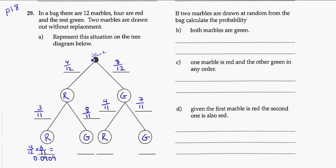And again, timesing along for the other option here. If I did red and then green, four over twelve times eight over eleven, that's going to get me 0.2424. My third option here, green and then red, that's eight over twelve times four over eleven. That will also get me 0.2424. And lastly, two green marbles. So that's eight over twelve times seven over eleven. That's going to get me 0.4242.